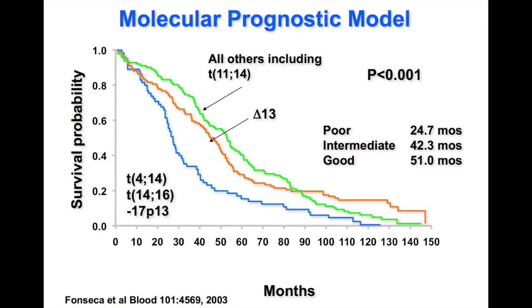It is critically important that patients get tested for risk category at the time of diagnosis, when they have their first bone marrow. This information must be available for treating doctors so we can make plans based on what we know about the nature of the cells. The translocation 11;14 is currently considered neutral — in the old days we thought it was better prognosis, but nowadays we consider it neutral, though it may present some treatment challenges in certain situations.